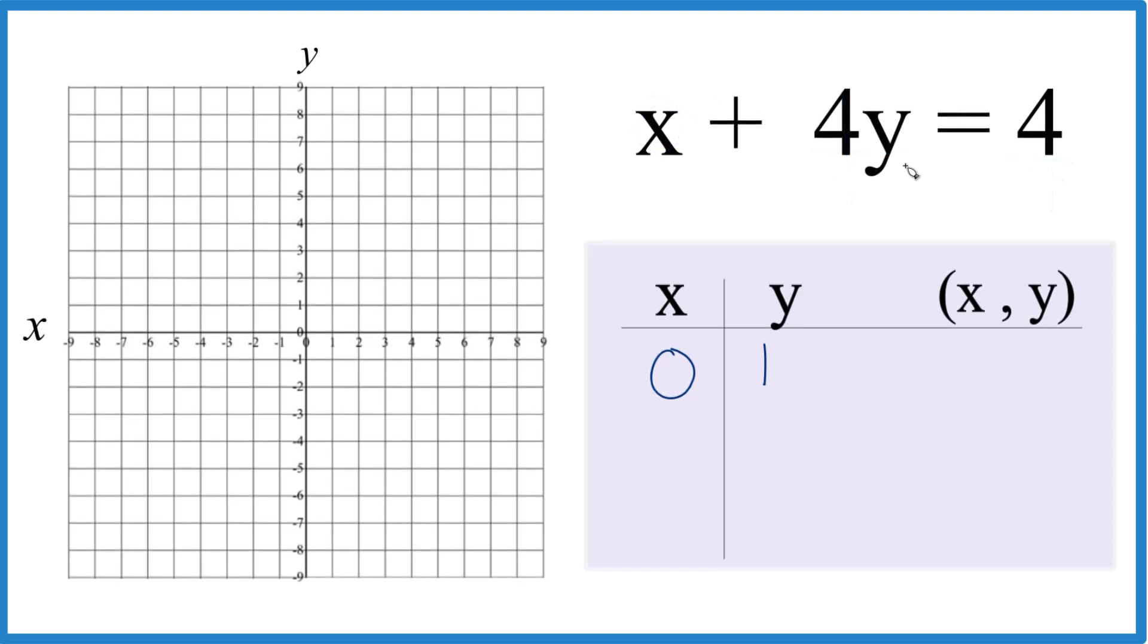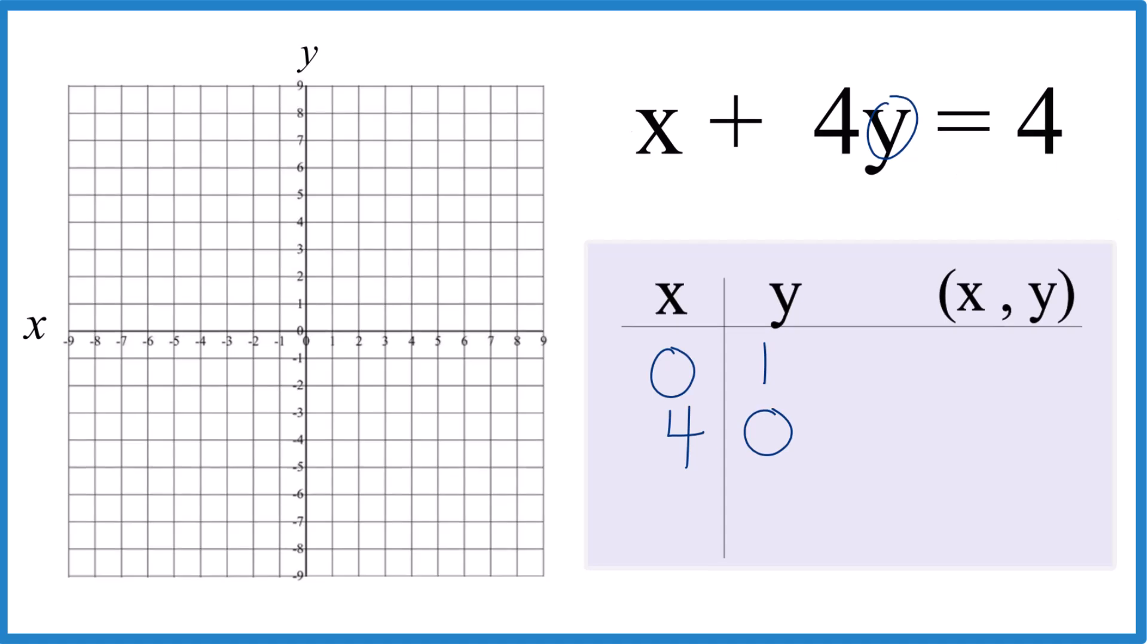Let's do another one. What if we said y is zero? So 4 times zero, that's zero. x would just equal 4. So we'll say y is zero, that means x is 4. And we have two points, and we can graph the equation with two points.